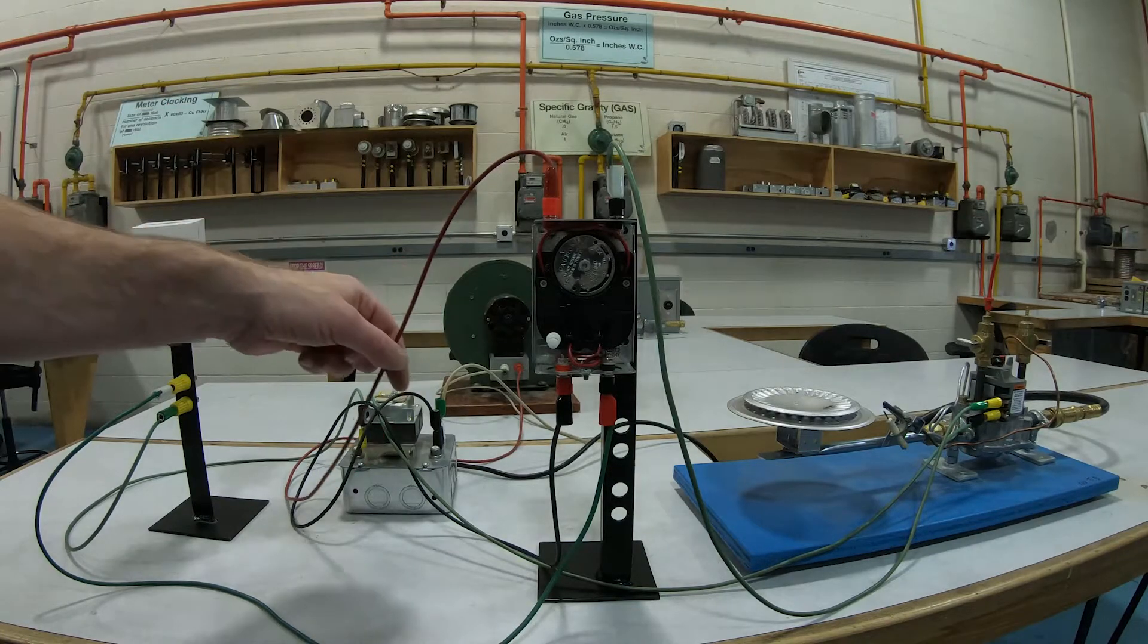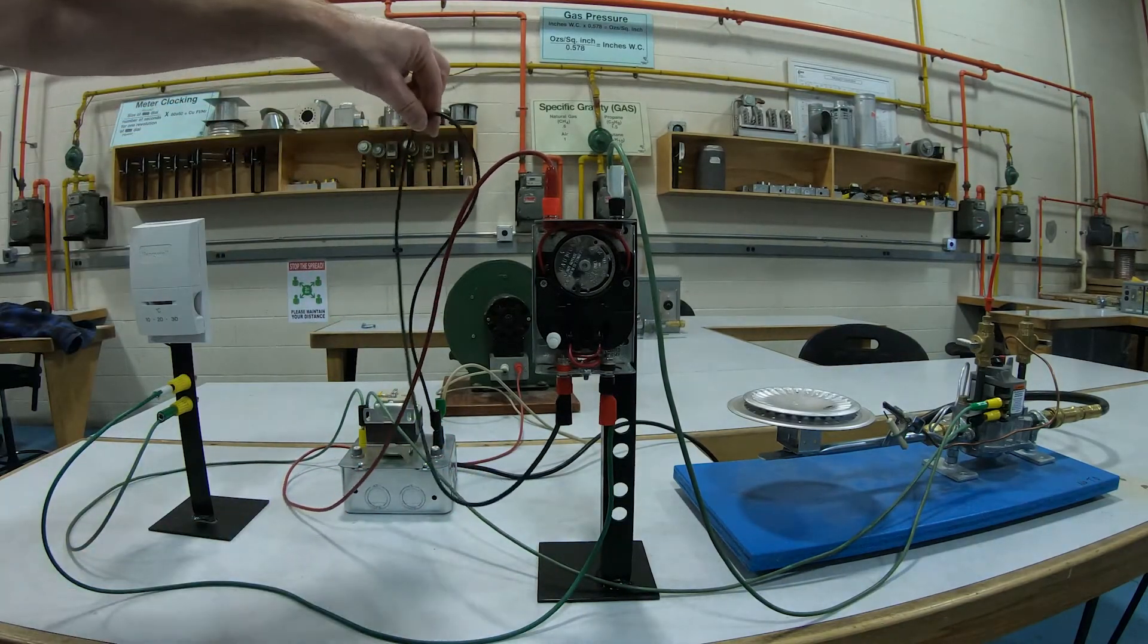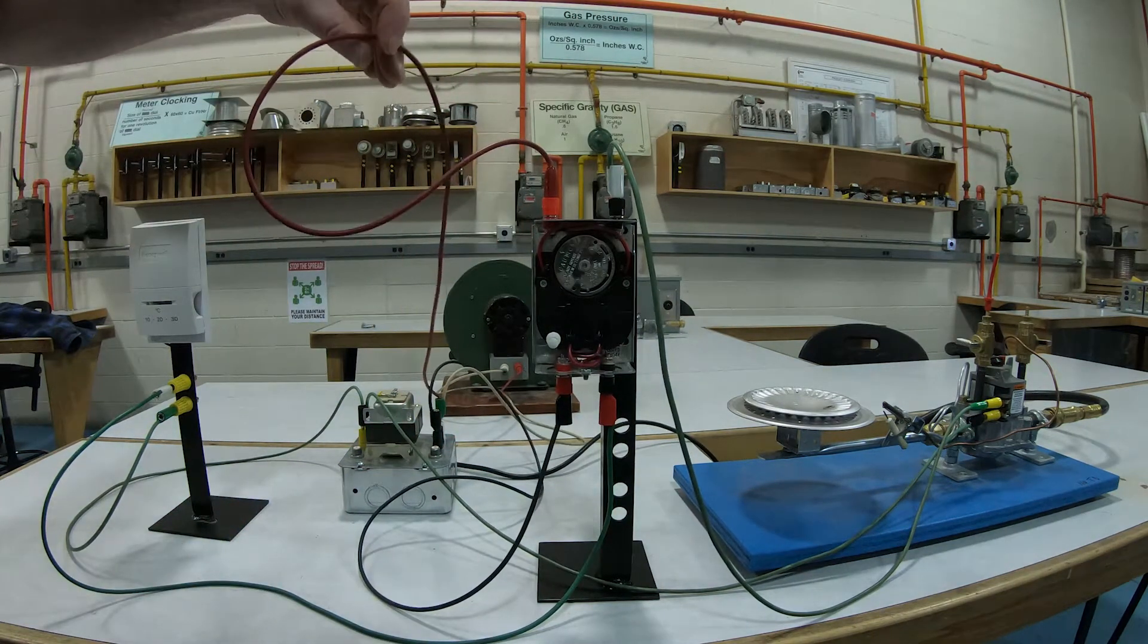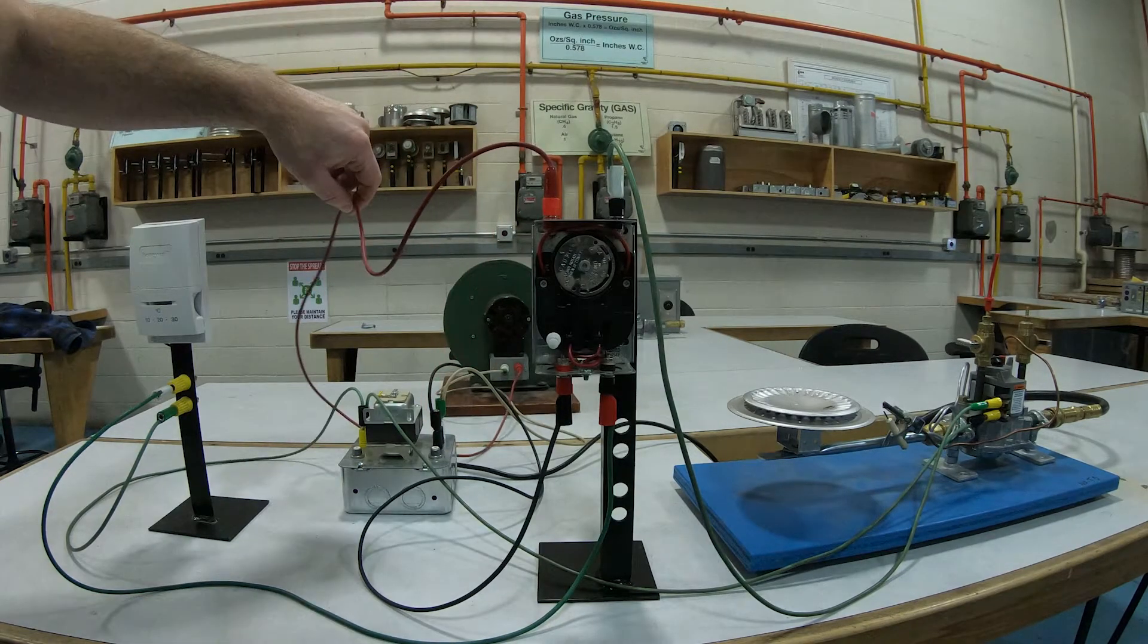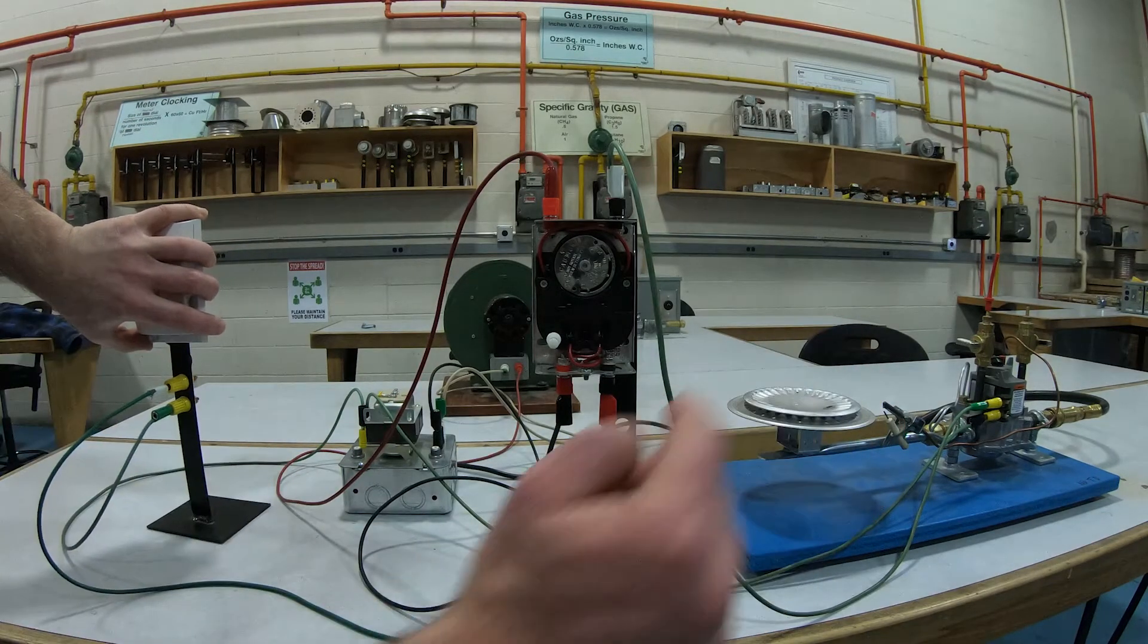What we're going to focus on right now is the fan switch. So what I have is 120 volts coming into my switch and what will be 120 volts coming back out of the switch when the fan is actually calling for heat. So we're going to just turn up a thermostat which will make our burner fire up.